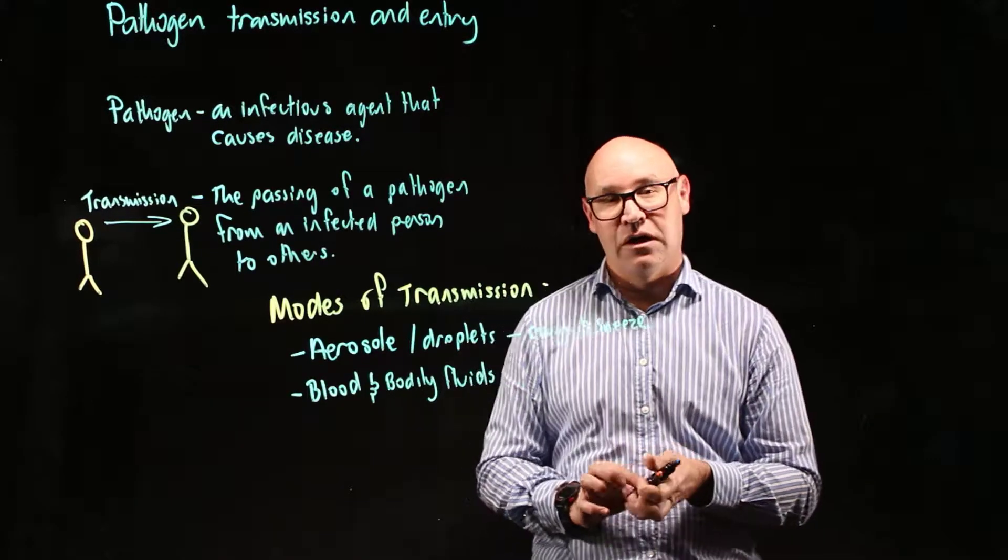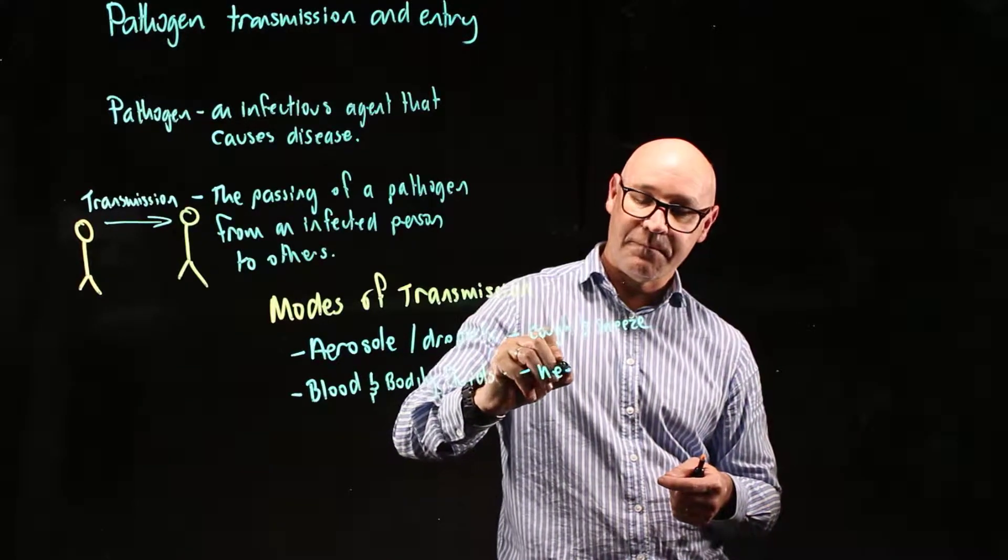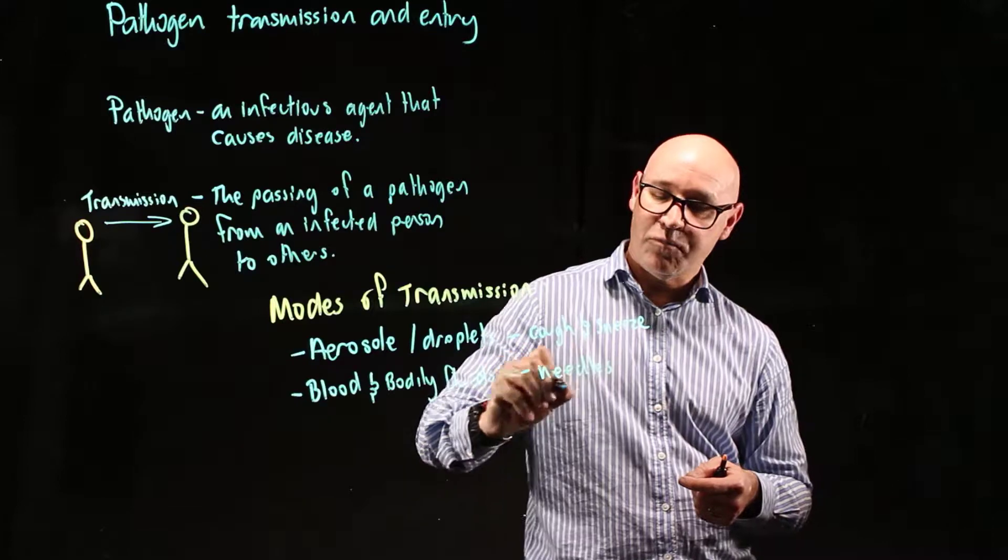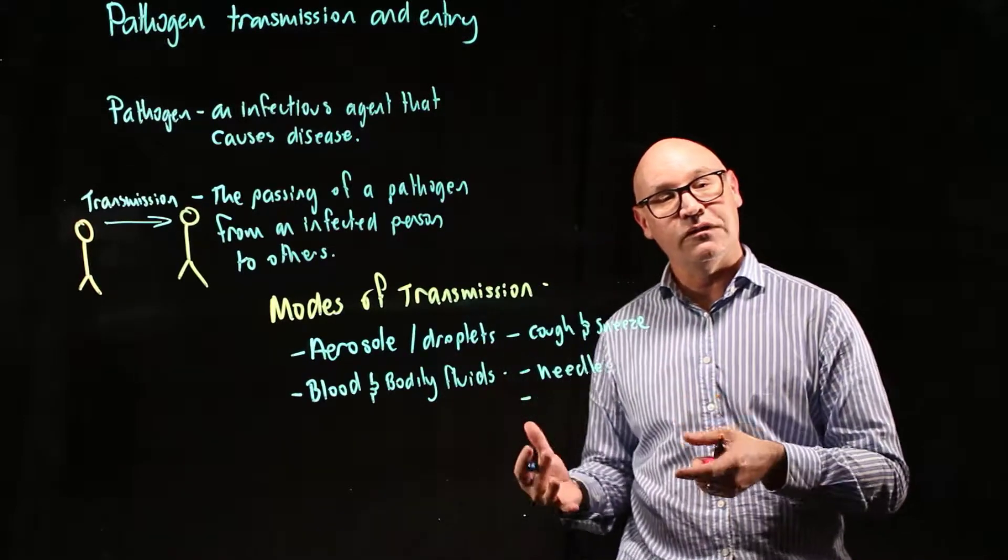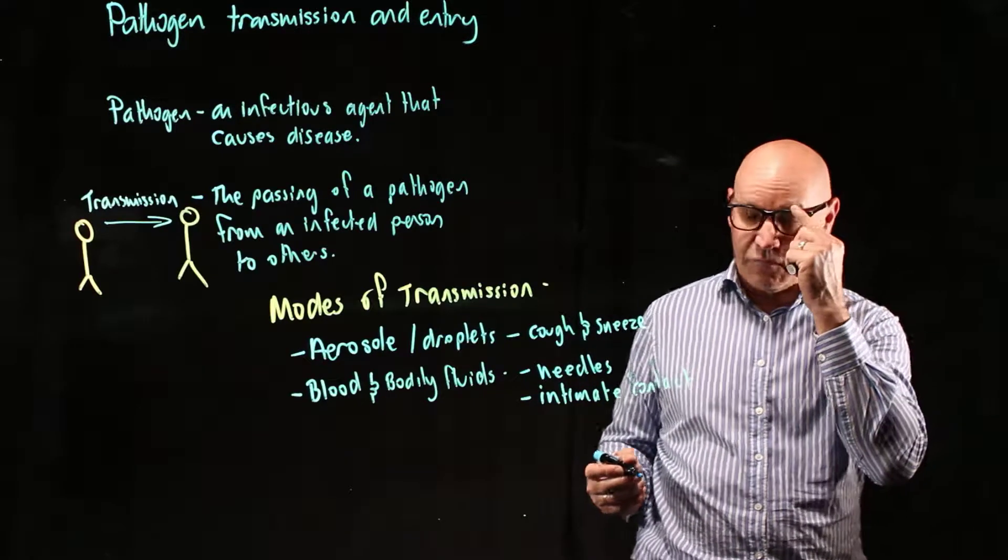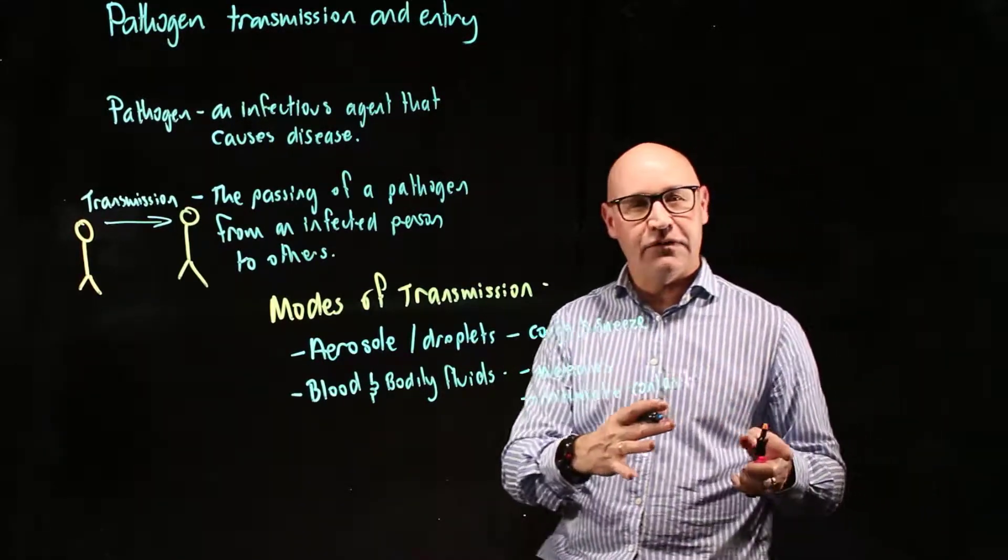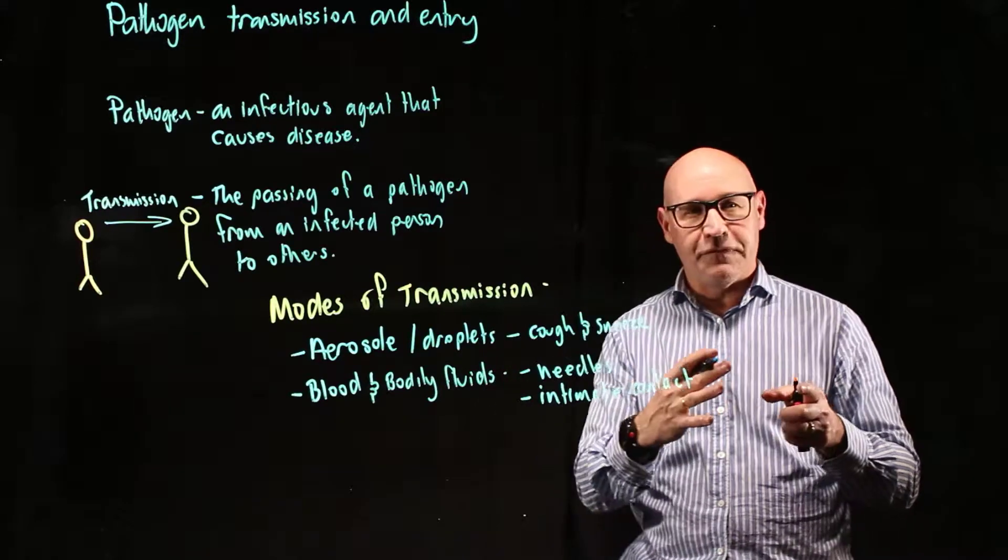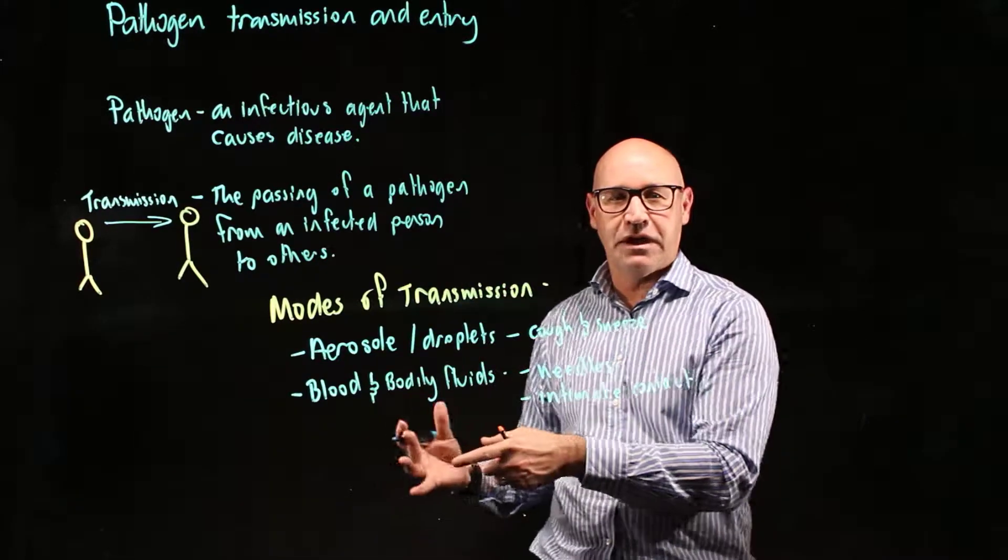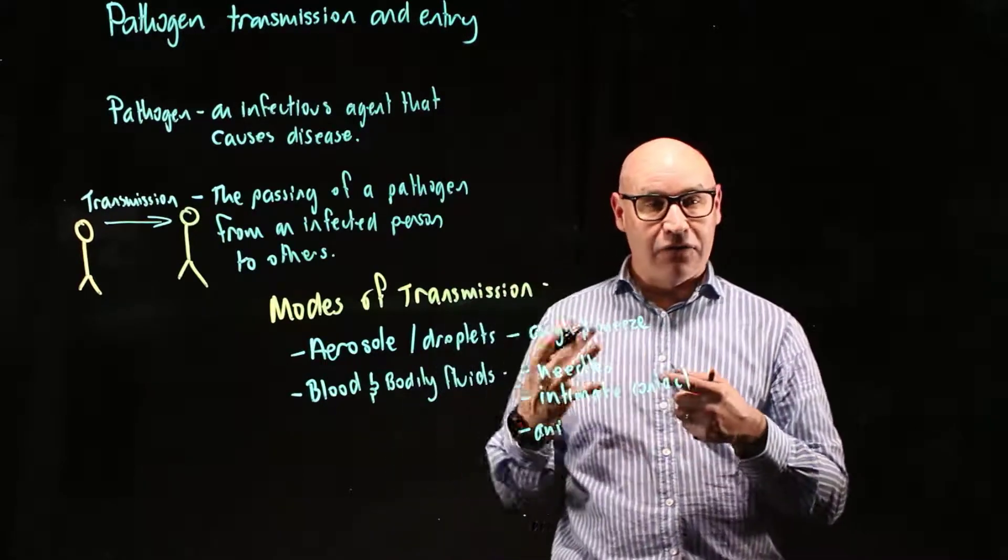Could be, say, through an infected needle like sharing needles or something. It could be through intimate contact. It could also be through an animal that has passed the blood or bodily fluids on from one person to another, like a mosquito bite or a dog bite.